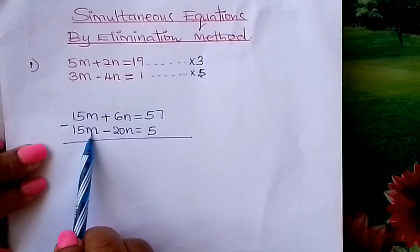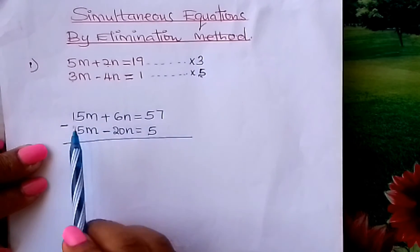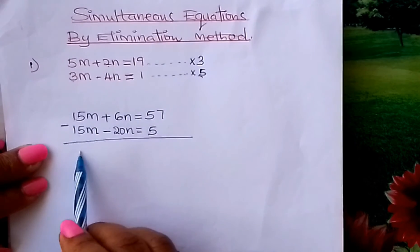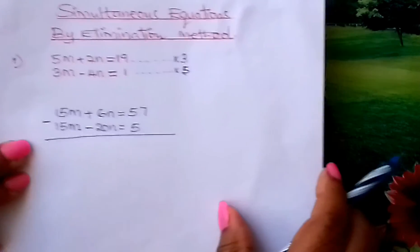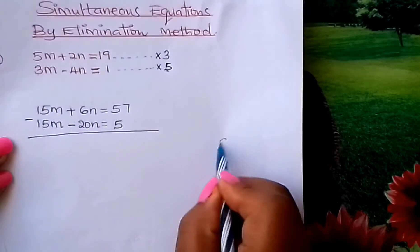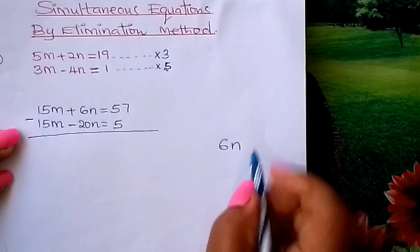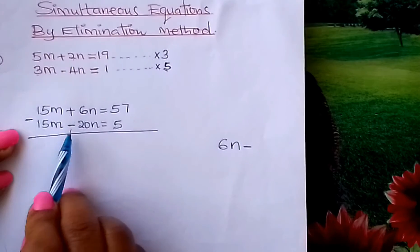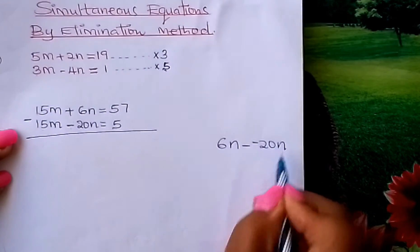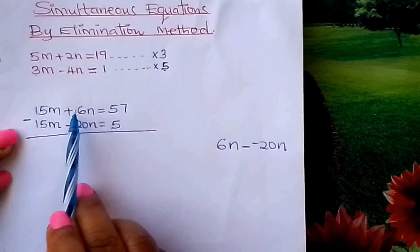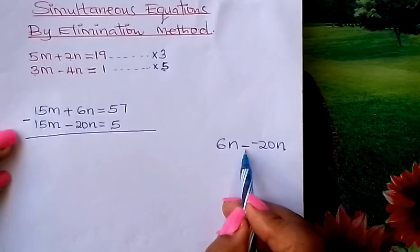So 15M minus 15M gives you 0. We have eliminated it. Then we go to this other term here: 6N minus negative 20N.